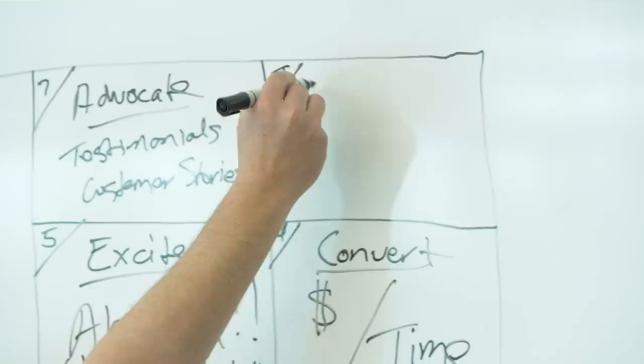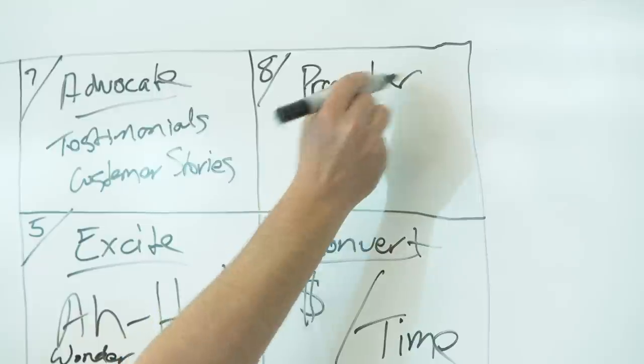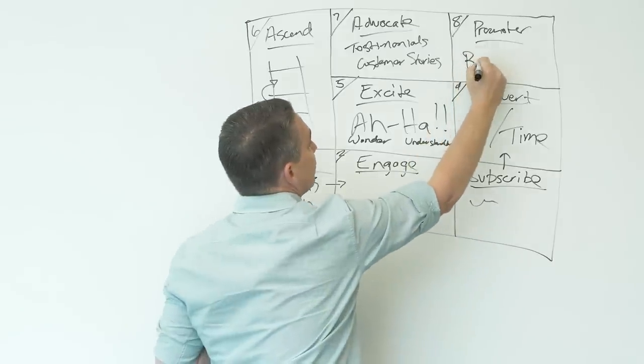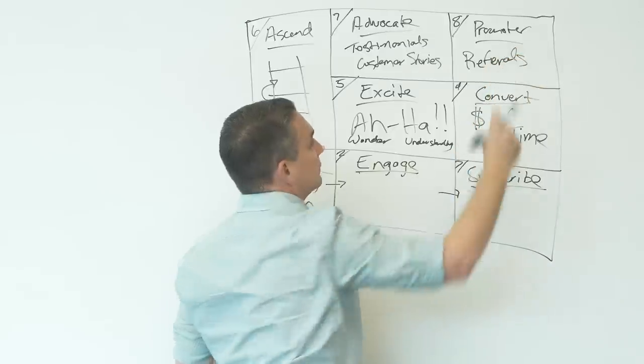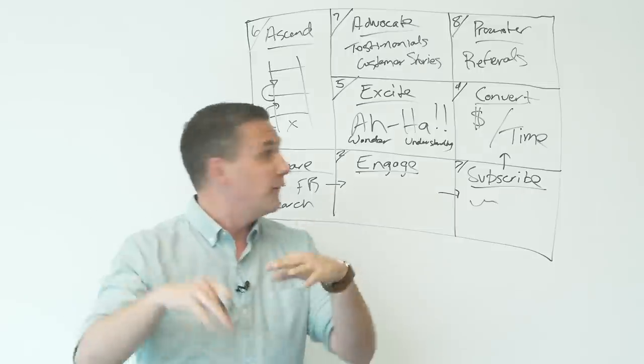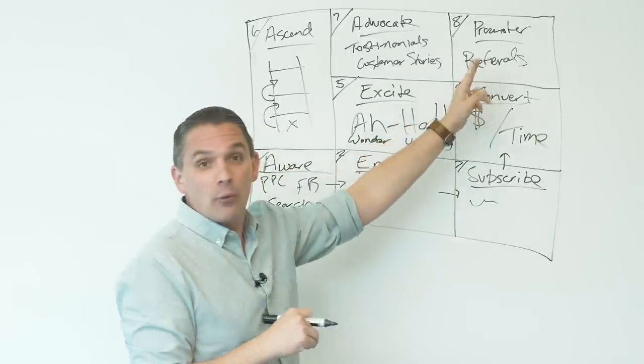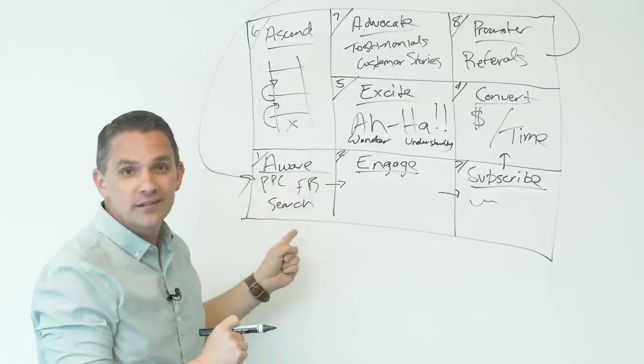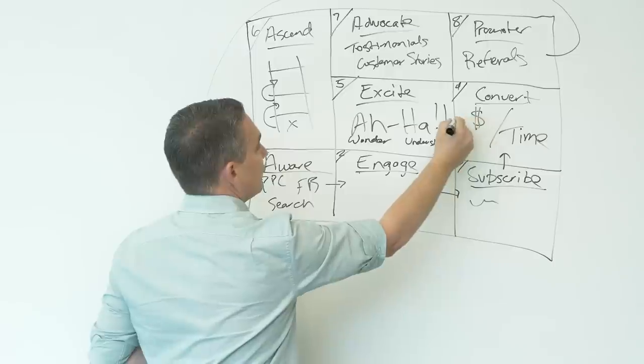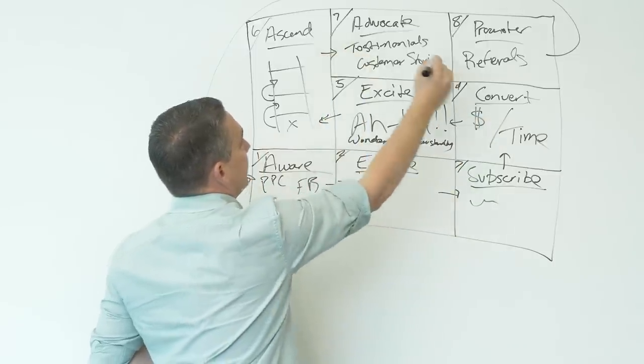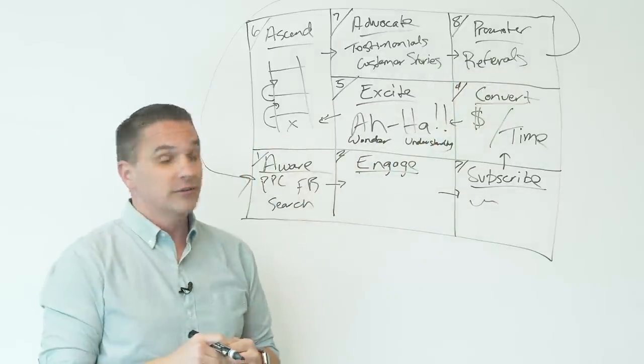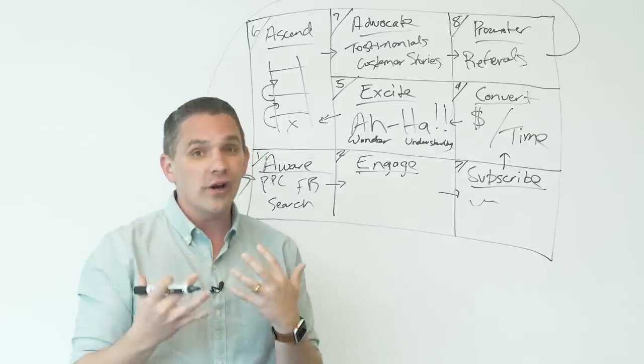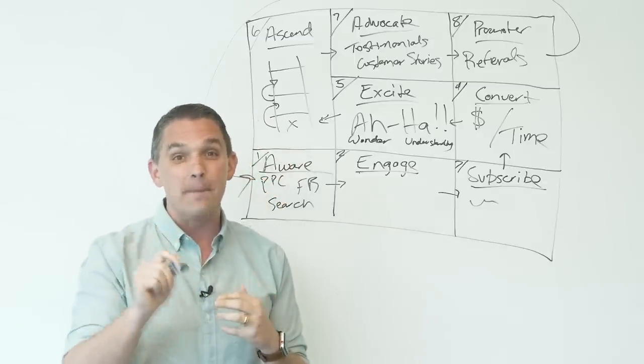The eighth and final stage is the promoter stage. And the promoter is essentially an advocate who is now actively promoting our products and services. So they are someone who's generating referrals. And the beautiful thing about referrals is what referrals wind up doing is they wind up closing the loop because referrals create additional awareness. So while this is a journey that flows through in the following manner, it eventually comes back around and closes the loop. Now, here's what I'll say about referrals. If you want to generate more referrals, don't worry about how do I make my customers happy? How do we run referral campaigns? Here's the key.